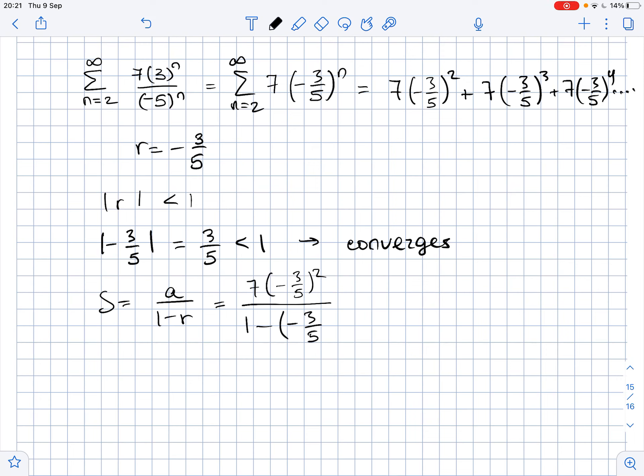This equals 7 times 9 over 25, divided by 1 plus 3 over 5, which is 8 over 5. This equals 63 over 40, which is our final answer.